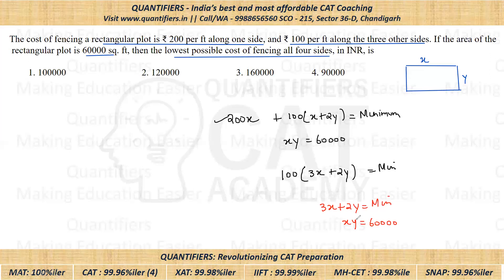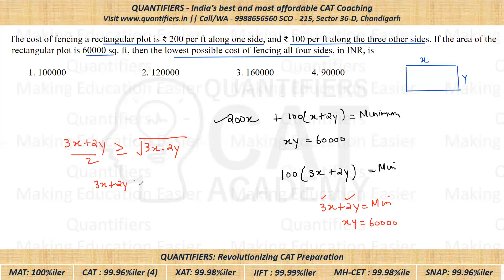I hope all of you know that if the product is given and we have to find the minimum sum, we use the concept that Arithmetic Mean is always greater than or equal to Geometric Mean. Applying AM-GM on 3X and 2Y: the arithmetic mean is (3X plus 2Y) divided by 2, which should be greater than or equal to their geometric mean, which is the square root of 3X times 2Y. So 3X plus 2Y is greater than or equal to 2 times the square root of 6XY.